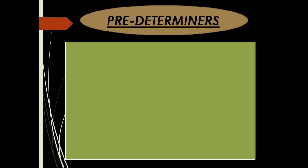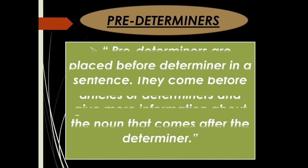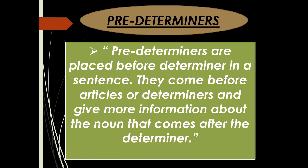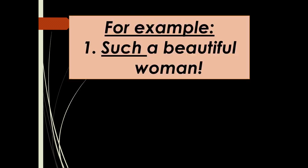Pre-determiners are placed before a determiner in a sentence. They come before articles or determiners and give more information about the noun that comes after the determiner. Examples of pre-determiners include: such, what, rather, all.